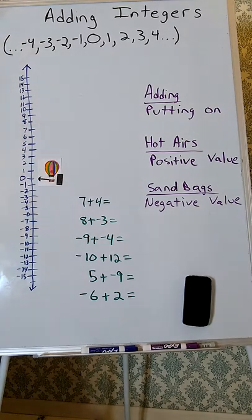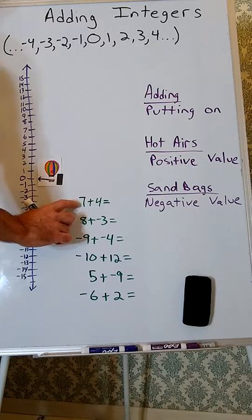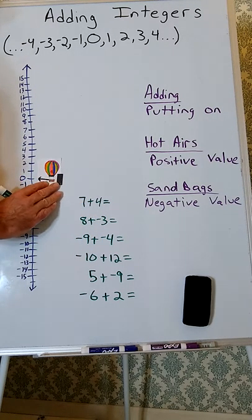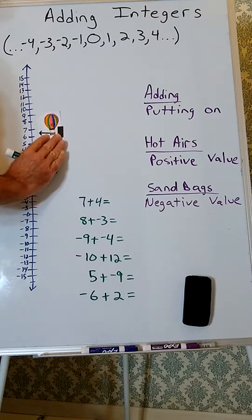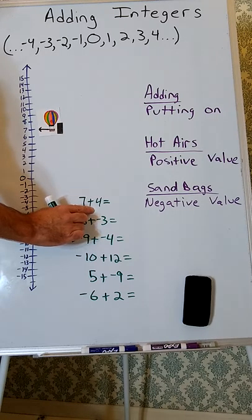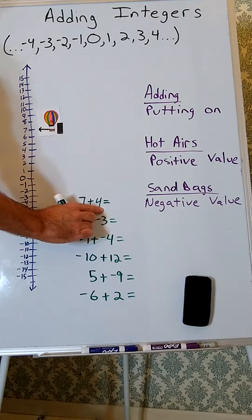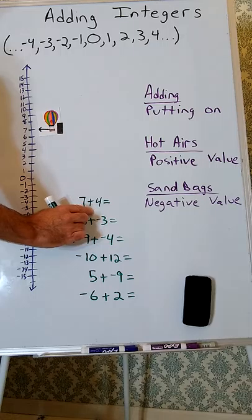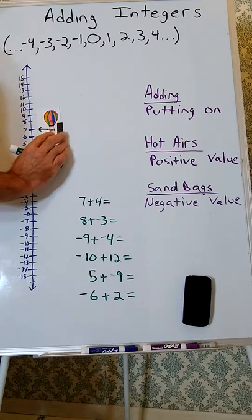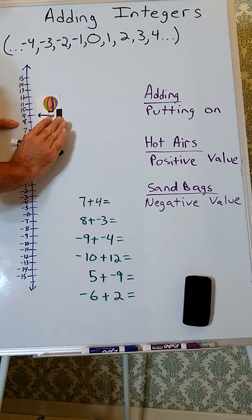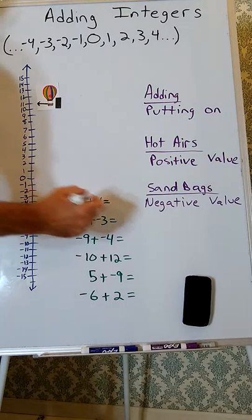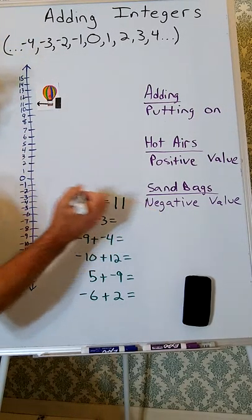So let's see how this model works. To add 7 plus 4, I start with 7 hot airs and that's going to make the balloon rise 7. Now I am putting on positive 4, so I'm putting on 4 hot airs. That's going to make the balloon rise 4. So I see that 7 plus 4 is 11.